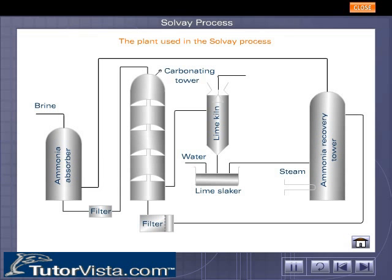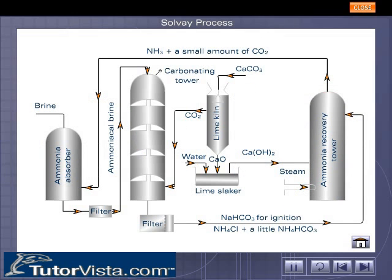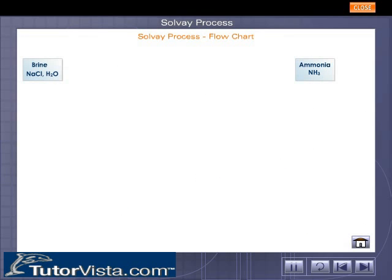Shown here is a schematic diagram of the plant used in the Solvay Process. Click on each part to know more about them. Observe closely the direction of movement of the arrows to understand the process that takes place in the plant. The flow chart for the Solvay Process is depicted here for easy understanding of the process.